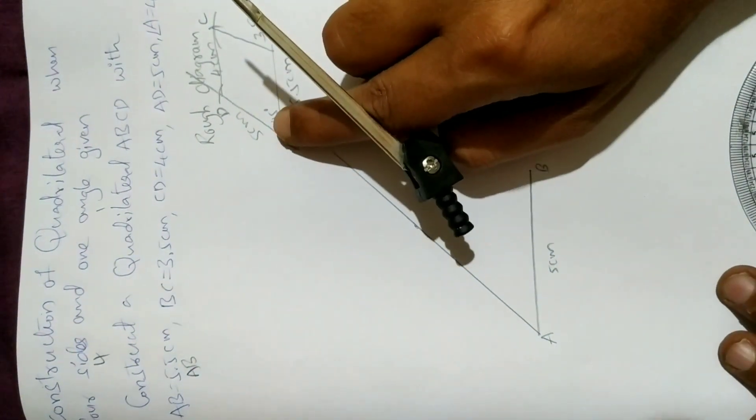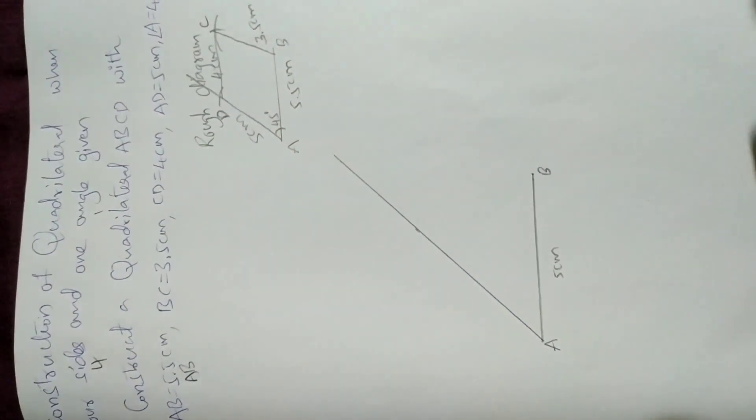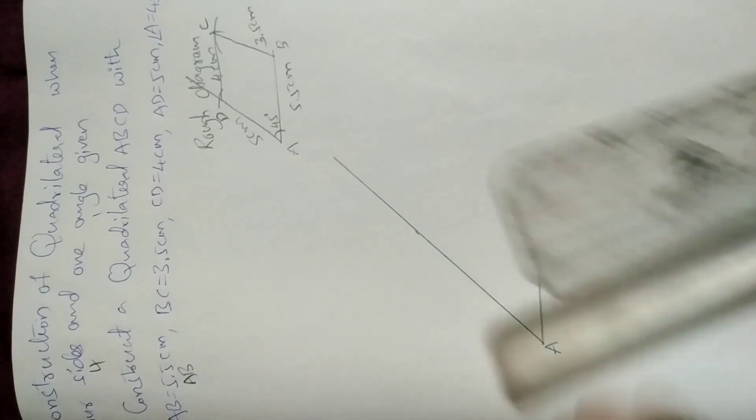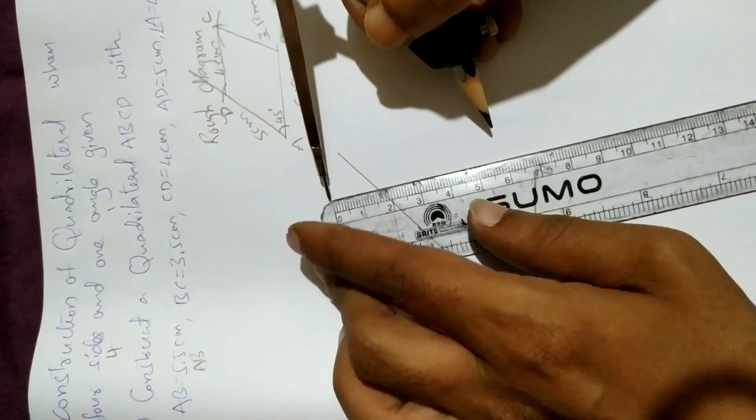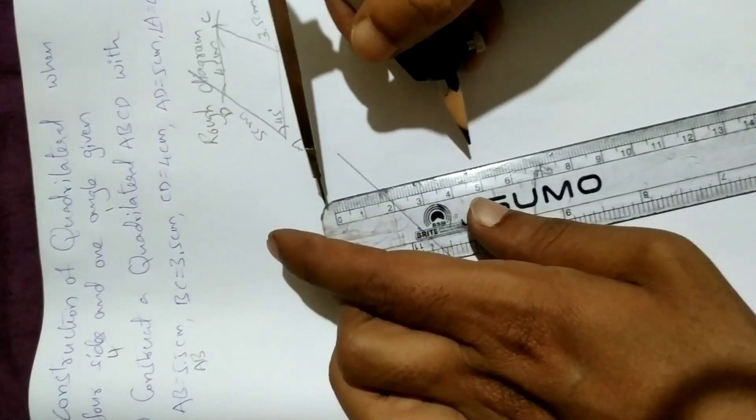Perfect. Next, with 5 centimeters radius, we cut the line. So now take 5 centimeters radius. With 5 centimeters radius, put it here at 0 and take 5 centimeters radius.